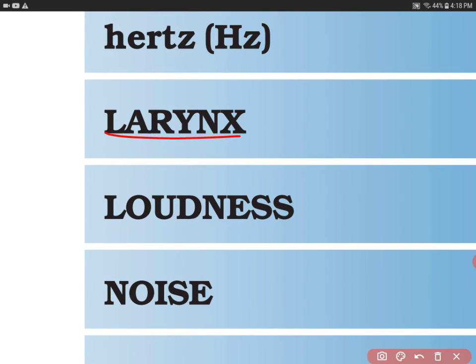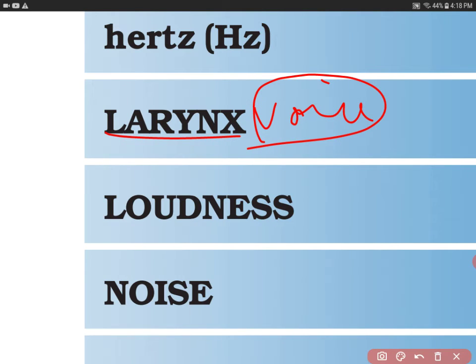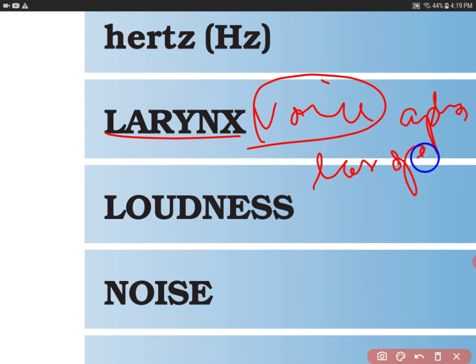The next word is larynx, which we also call the voice box. Humans are able to speak because of the vibrations in the larynx. If for some reason our larynx gets paralyzed, we would not be able to speak at all. This condition is called aphasia, which means loss of speech. Loss of speech can be because of the paralysis of the vocal cord, which sits on top of the larynx and vibrates to produce sound.